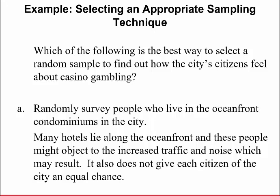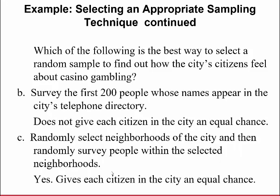Continuing on, which of the following is the best way to select a random sample to find out how the city's citizens feel about casino gambling? First is randomly survey people who live in the oceanfront condominiums of the city. Many hotels lie along the oceanfront and these people might object to the increased traffic and noise. It also does not give each citizen an equal chance because we're only talking about people who live in the oceanfront, so that's probably not good. How about survey the first 200 people whose names appear in the city's telephone book? Absolutely not. This does not give each citizen an equal chance. How about randomly select neighborhoods of the city and then randomly survey people within the selected neighborhoods? Well, actually yes, this gives each citizen in the city an equal chance of being selected.